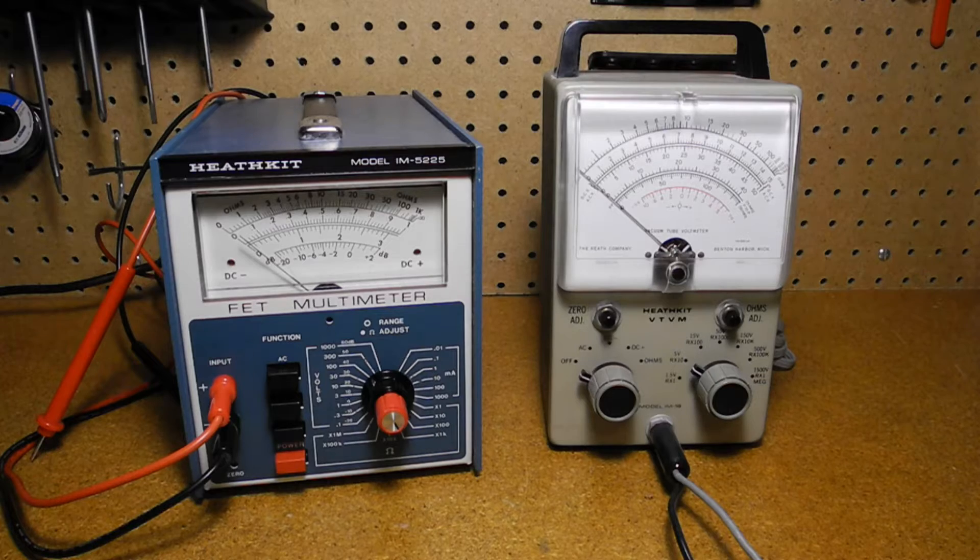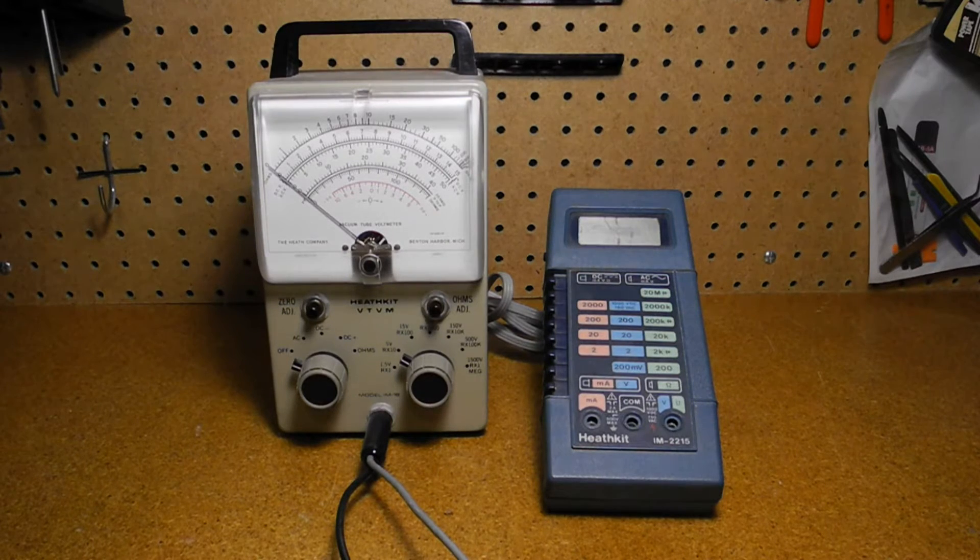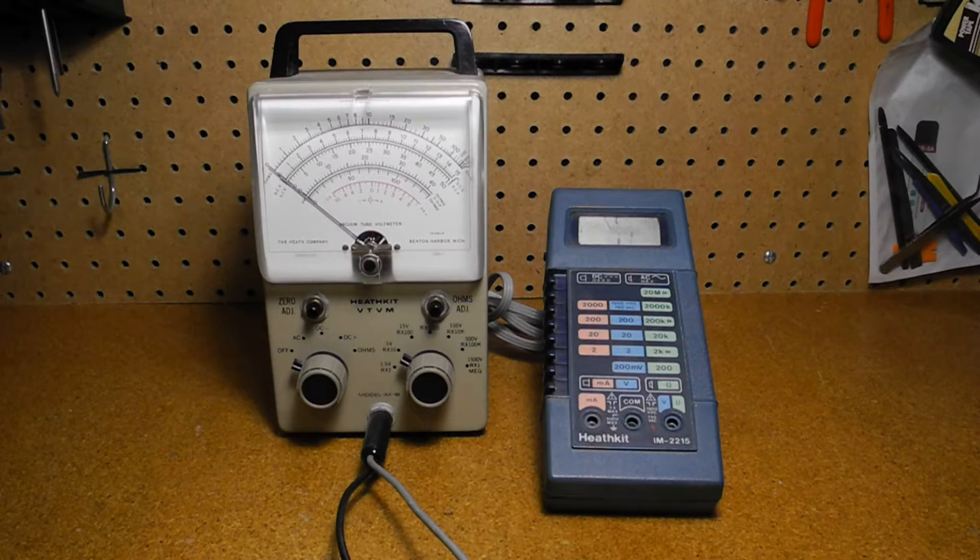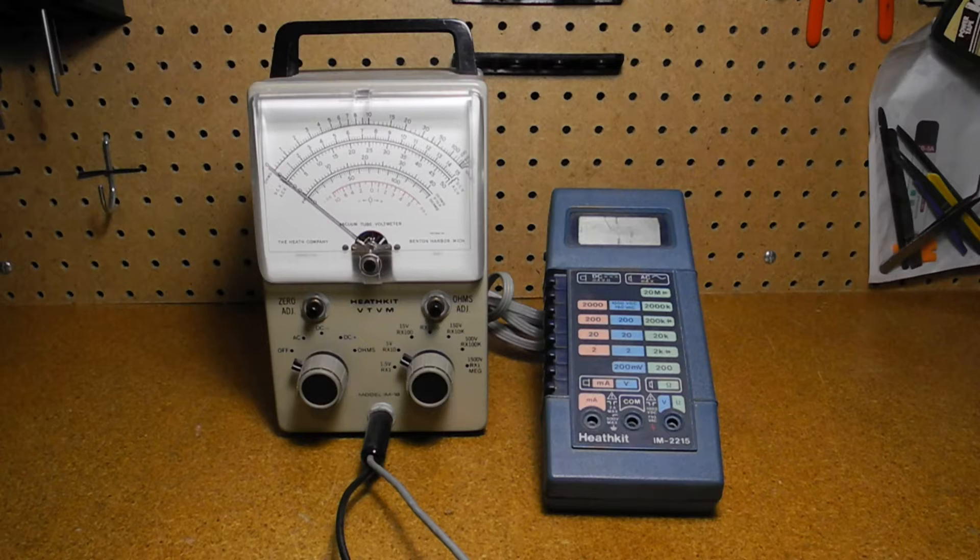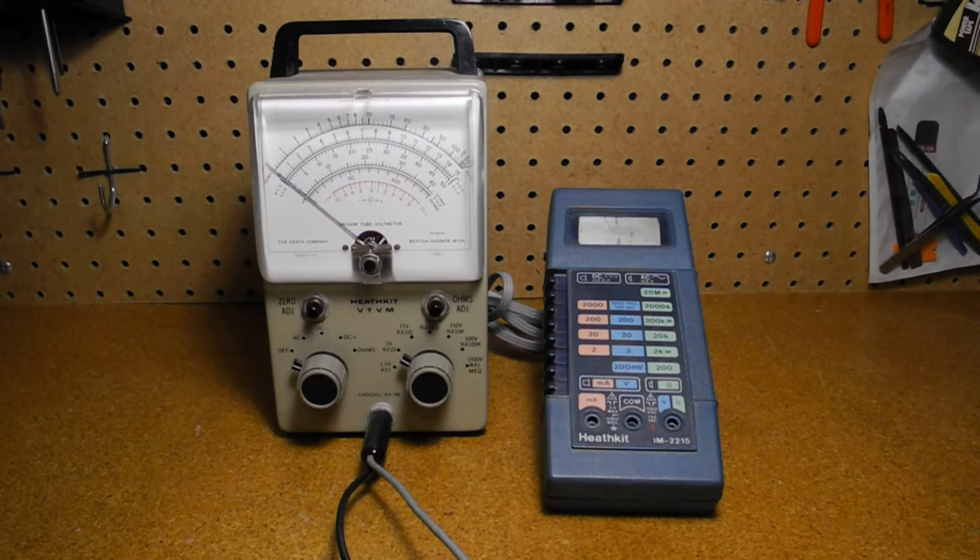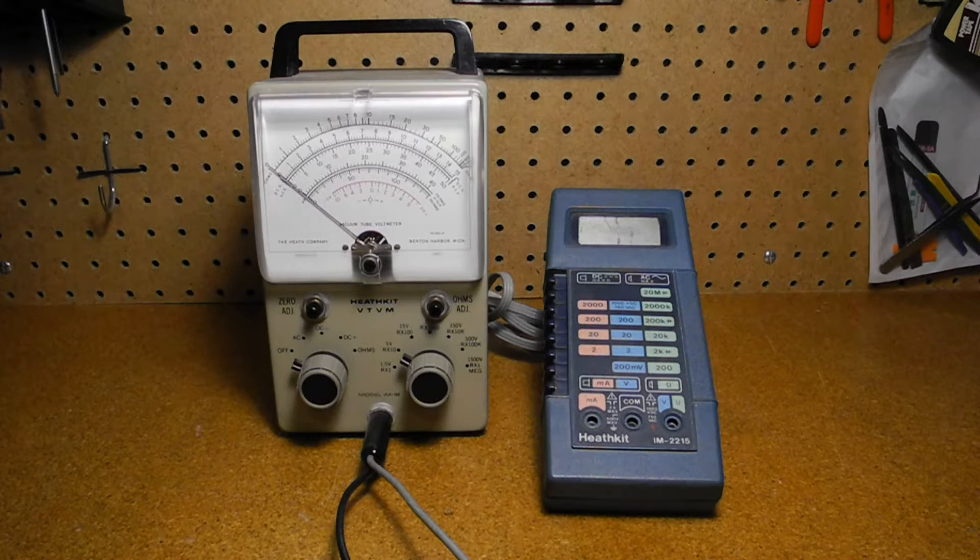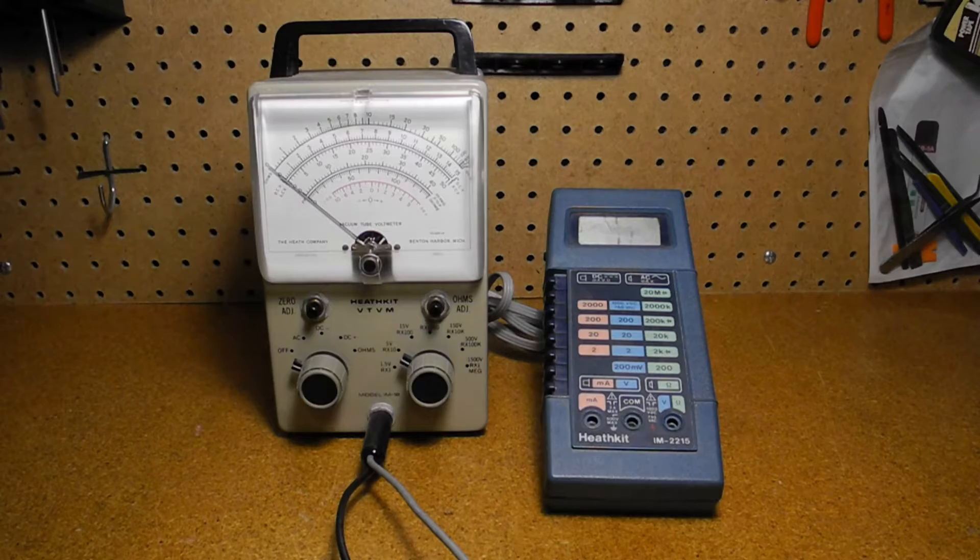Heathkit offered many models of VTVMs over its history, as well as several VOMs. In fact, if you combine the various models, which were essentially the same circuit, the VTVMs were Heathkit's top-selling and longest-running product. They also offered some more modern digital multimeters before they left the kit business in the early 1990s.